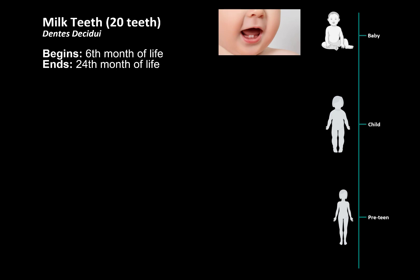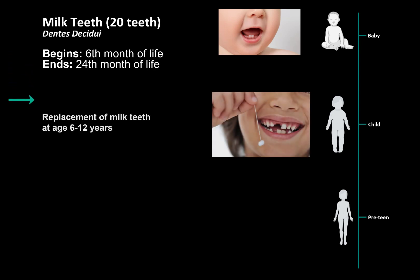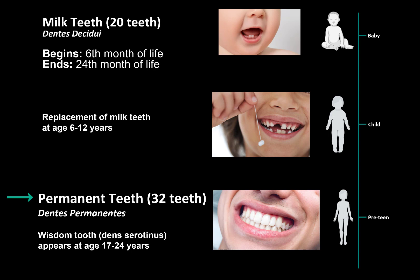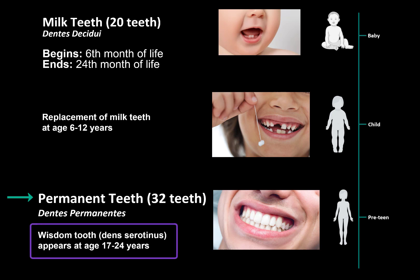Throughout our lives, we have two sets of teeth. The first set are called milk teeth, and there are usually 20. They begin to show up at around 6 months of life, and by the time you're approximately 24 months old, we should have a full set of milk teeth. As we grow, the milk teeth gradually start to fall off between the ages of 6 to 12 years, and then they start to get replaced by the permanent teeth. The permanent teeth consist of 32 teeth. The last set, which appear at around 17 to 24 years, are called the wisdom teeth — they're called that because they appear late, after all the other teeth have appeared.